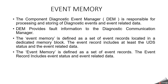What is Event Memory? Event memory is defined as a set of event records located in a dedicated memory block. The dedicated memory block will be stored inside the NVM. The event record includes at least the UDS status and the event related data. So basically, a monitor function triggers an event, it goes to the Diagnostic Event Manager where event status and event related data get stored inside the event memory. Then it goes to the Diagnostic Communication Manager to read the event status and event related data, handled by service 0x19.